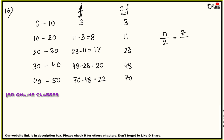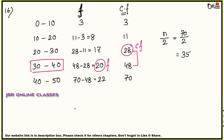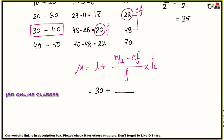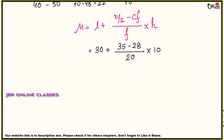n/2 = 70/2 = 35. CF value 35 falls between 28 and 48, so the median class is 30–40. L = 30, n/2 = 35, CF = 28, f = 20, h = 10. Median = 30 + [(35 − 28)/20] × 10 = 30 + [7/20] × 10 = 30 + 3.5 = 33.5. Final answer: 33.5.